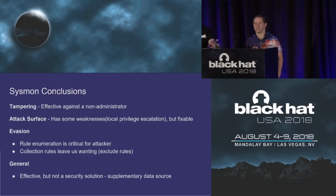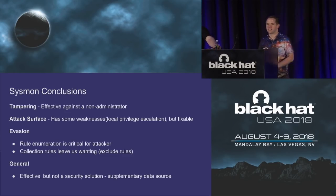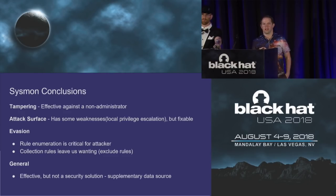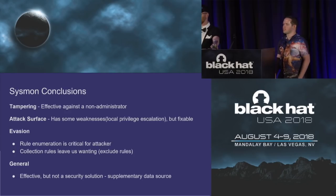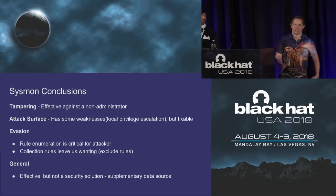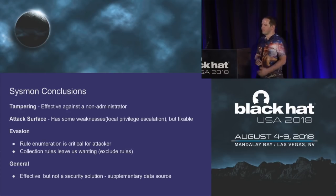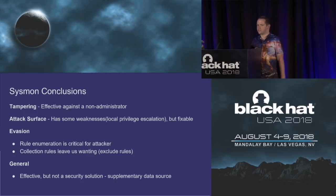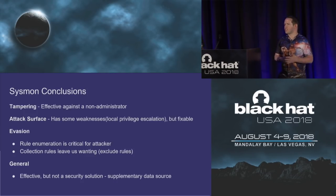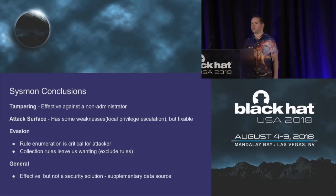Our conclusions about Sysmon — analyzed from a data collector perspective. From a tampering perspective, it's effective against non-administrators; once you're admin, all bets are off. From an attack surface analysis, Sysmon has a pretty small attack surface; there are a couple of weaknesses with the privilege escalation opportunities, but they're easily fixable. In terms of evasion, rule enumeration is critical for an attacker. An attacker could also take advantage of loud events that typically aren't analyzed. Analyzing the config file is super important. The exclude rules leave us wanting — because when an exclude rule exists, it's so easy to build an evasion using it. If there was a way to build better collection rules to exclude things in a more targeted manner, that would help.